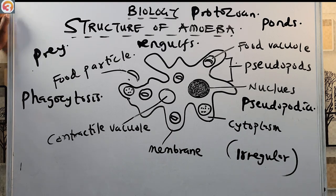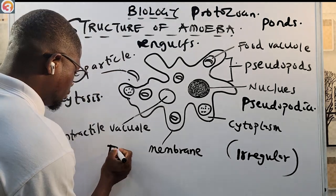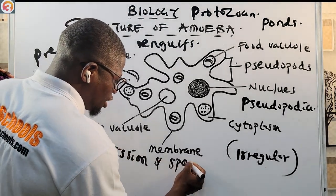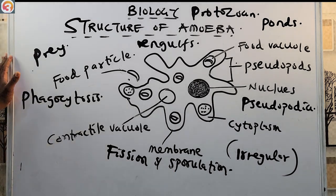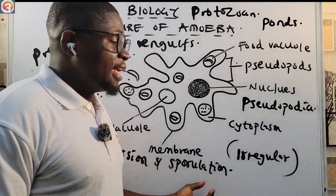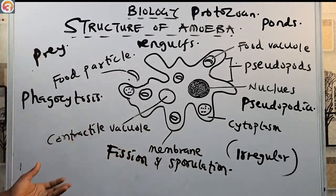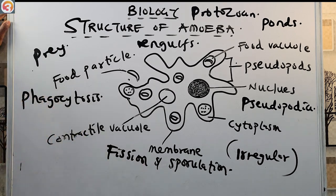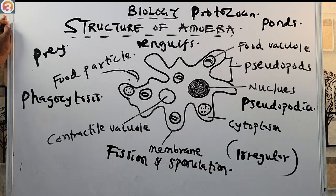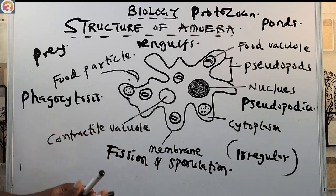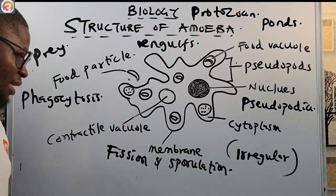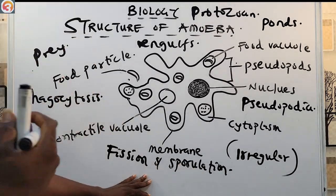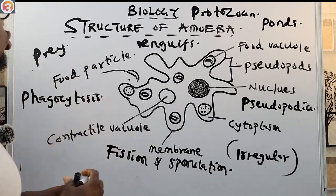Amoeba reproduces by means of fission and also by sporulation. Fission is nothing more than cell division — starting from the parent cell, the nucleus divides, then the cytoplasm divides, leading to the formation of two daughter cells.